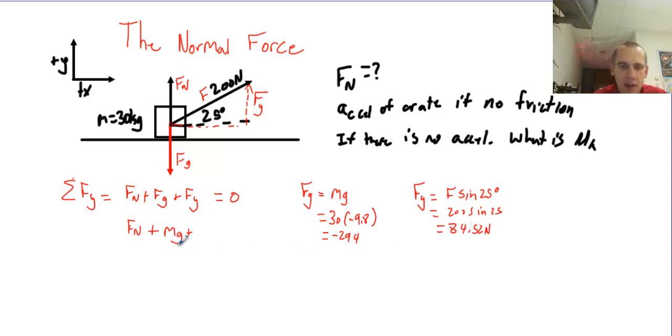Alright, so now I've got a whole bunch of stuff I can sub into this equation. So I'm actually going to go ahead and do that. I have Fn, I'm just going to write Fn because I don't know it. Plus Fg, but Fg is plus a negative, right? Negative 294 plus Fy, 84.52, equals zero.